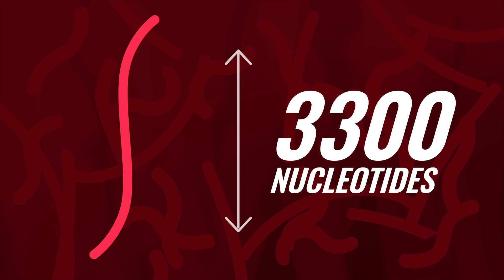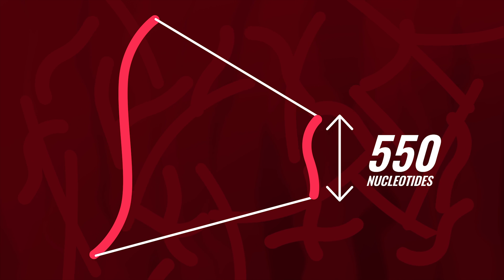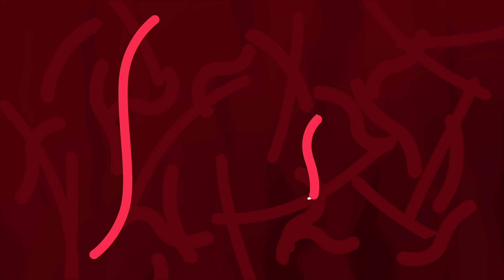In the end, the RNA strand of around 3300 nucleotides added to the first test tube had been shortened down to an average of 550 nucleotides. The original RNA strand was nowhere to be seen, having been driven to extinction by shorter mutants.